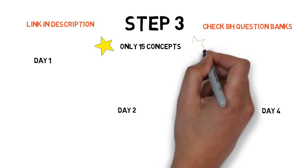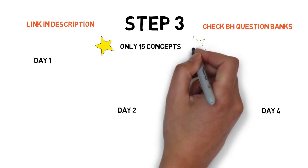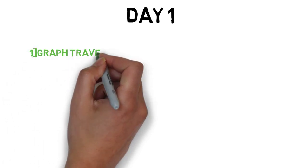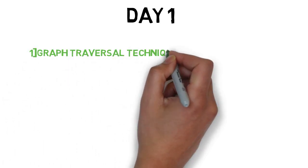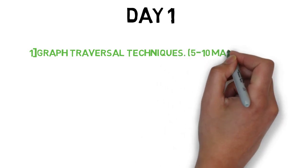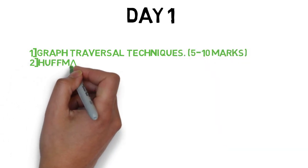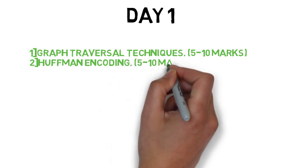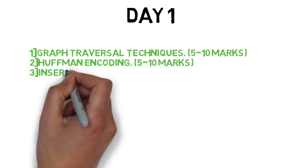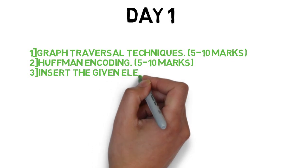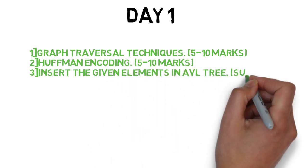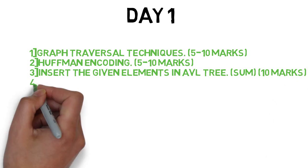Let's start the Day 1 plan. On Day 1, the first topic is graph traversal techniques, which comes for 5 to 10 marks. The second question is Huffman's encoding, which also comes for 5 to 10 marks. The next question is to insert given elements in an AVL tree, which always appears in exams.